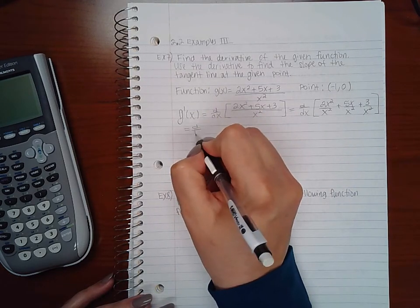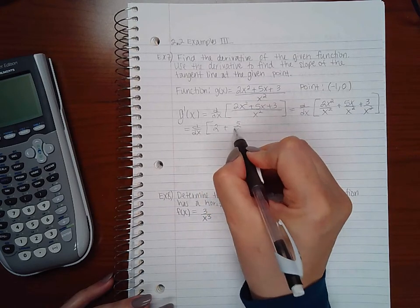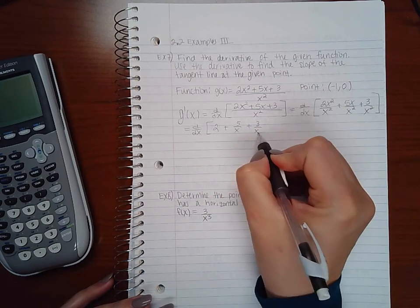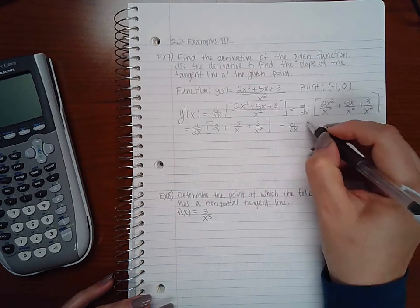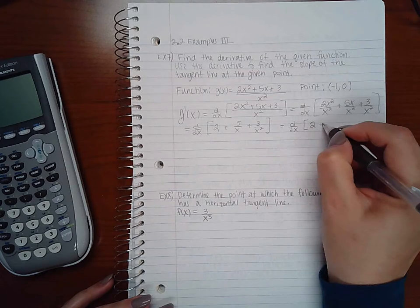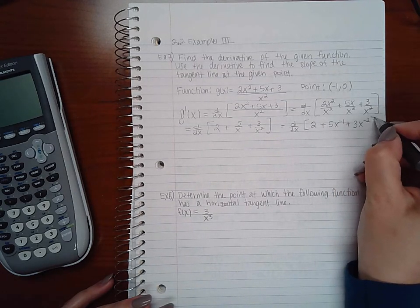Then I'm going to reduce each fraction so that I get 2 plus 5 over x plus 3 over x squared. Then I'm going to write the x's in the denominators as negative powers: 5x to the negative 1 plus 3x to the negative 2.